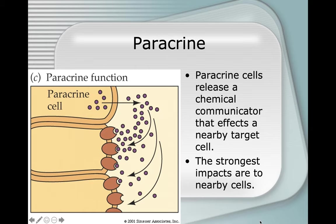In paracrine function, cells release a chemical communicator that affects a nearby target cell. The strongest impacts are to nearby cells. There are paracrine cells in the pancreas that communicate between the alpha and beta cells.